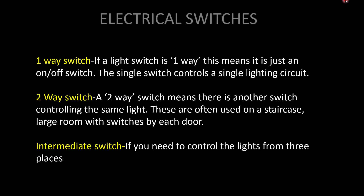Another classification is one-way, two-way, and three-way switches. A one-way switch controls a device or light from one location. A two-way switch is used in large rooms or staircases where we need to control a light from two locations. For controlling a light from three locations, we use an intermediate switch — this is also called three-way switching.